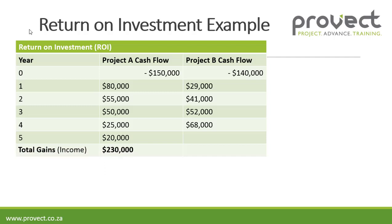The total gain or income for project A is $80,000 plus $50,000 plus $25,000 plus $20,000, which equals $230,000. That's our total gain. Our average annual profit — which is the total gain minus the total outlay divided by the number of years — is $16,000 per year for project A.